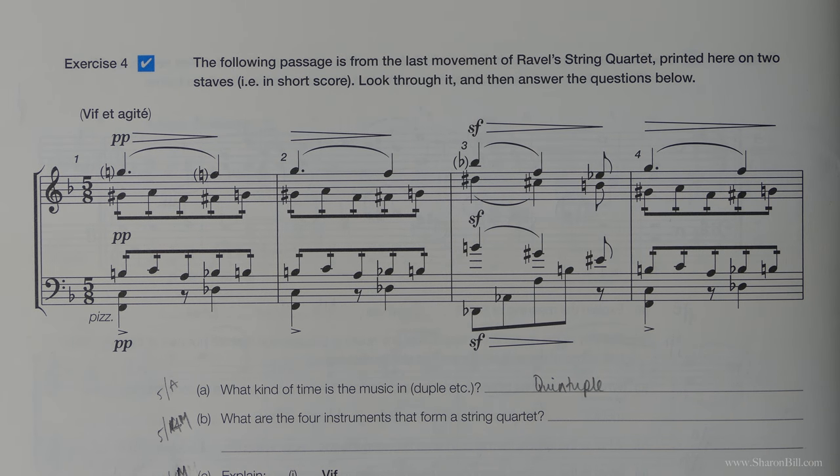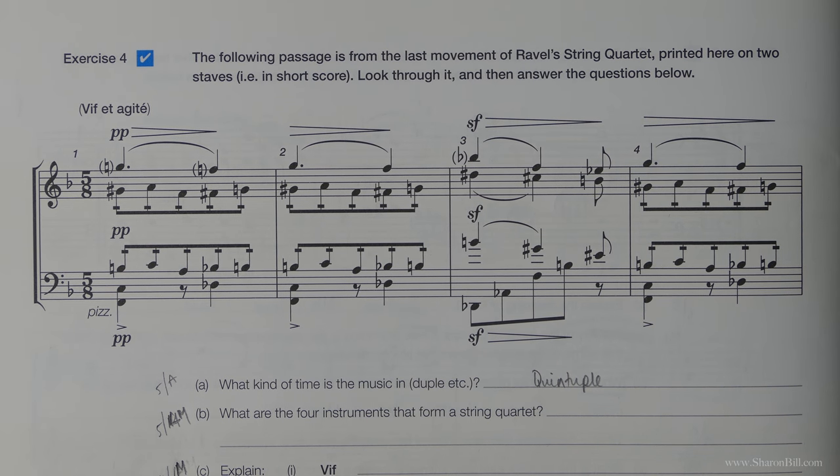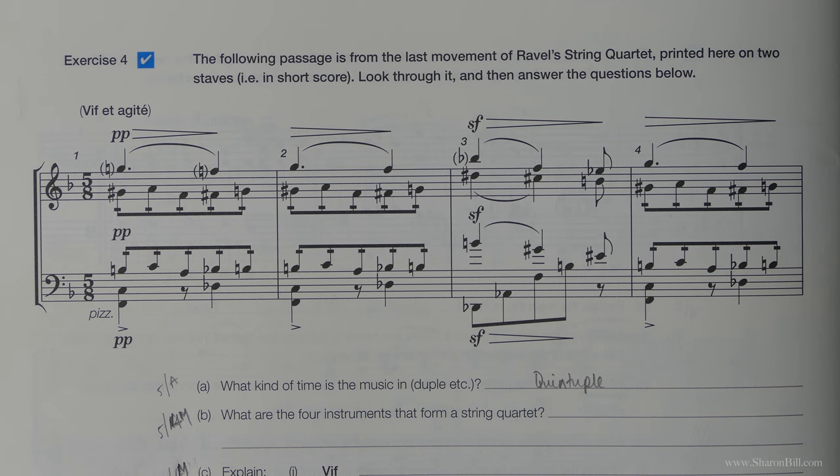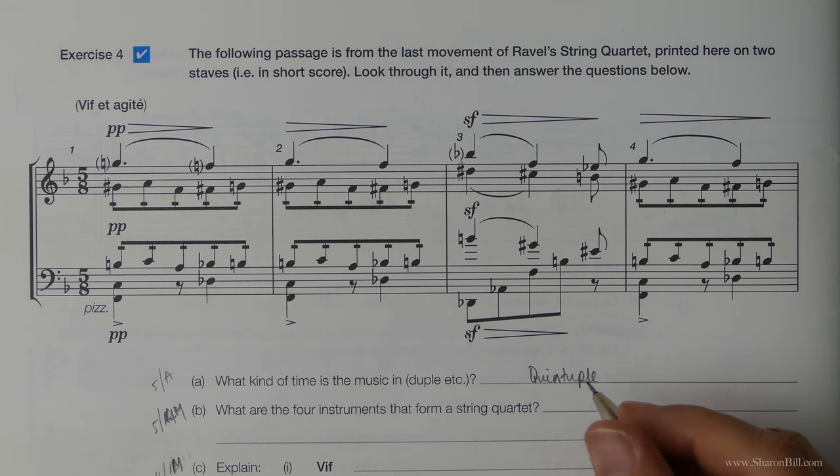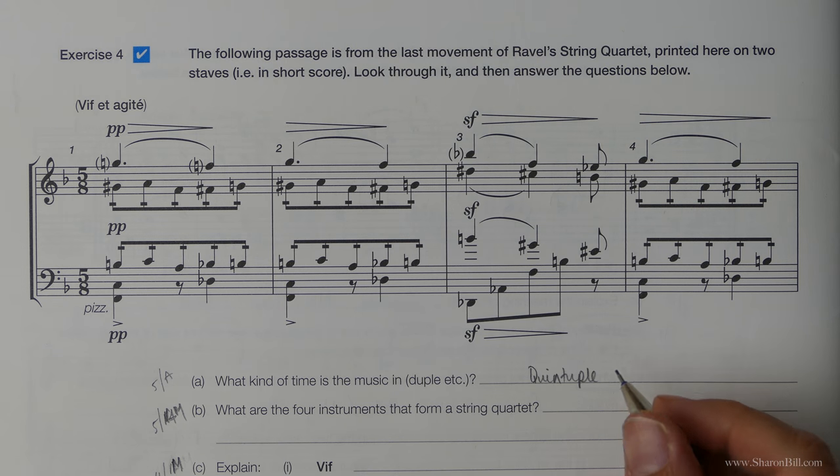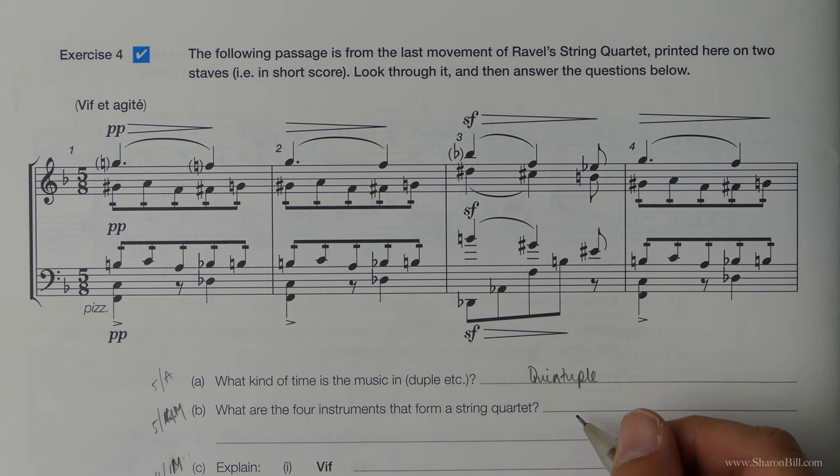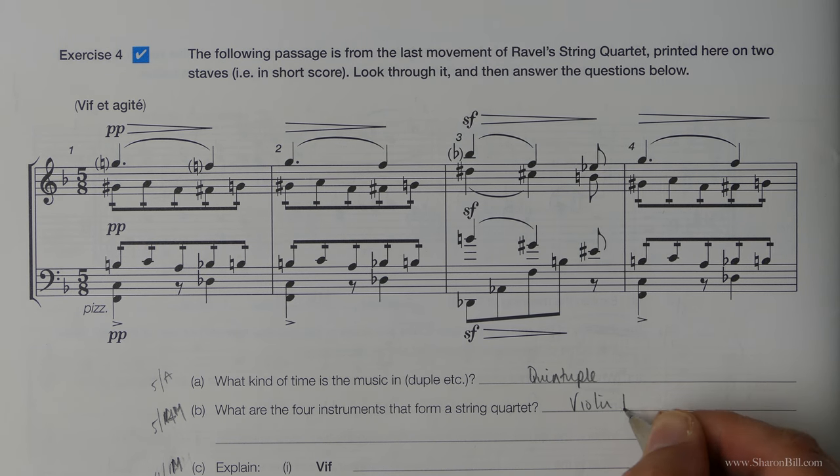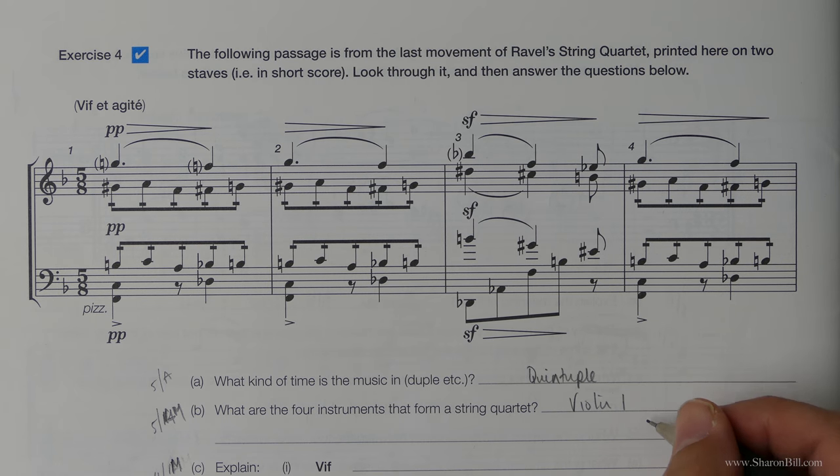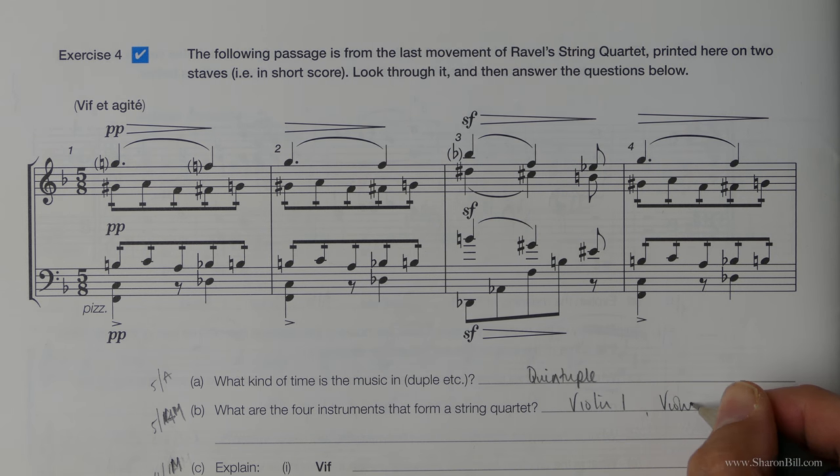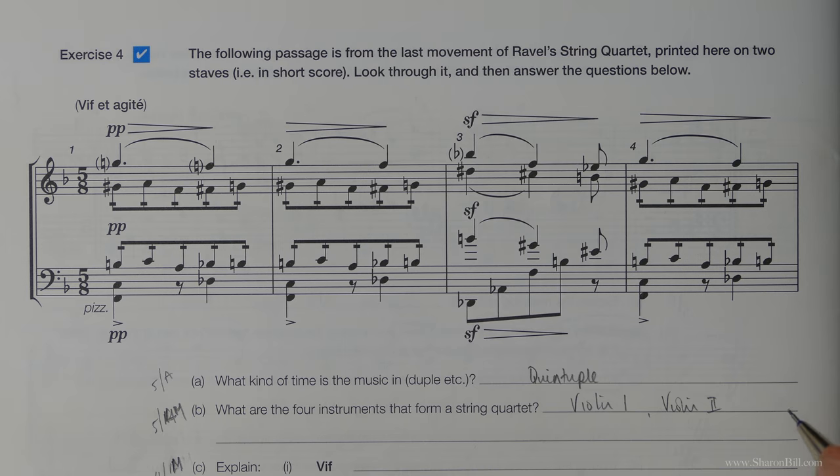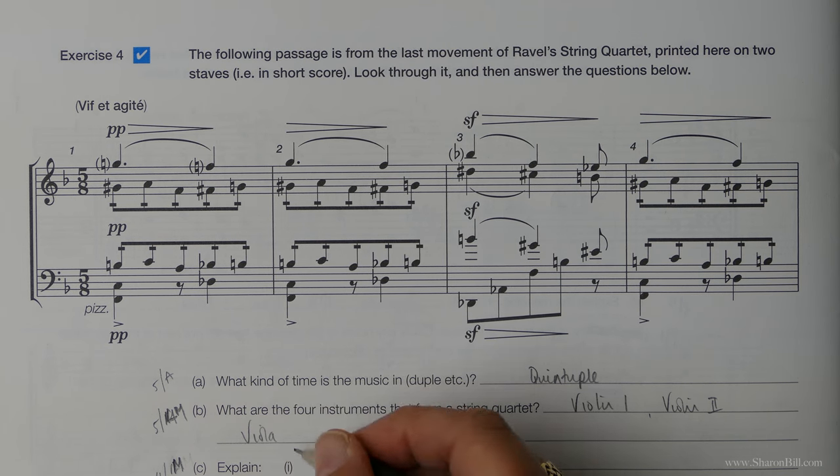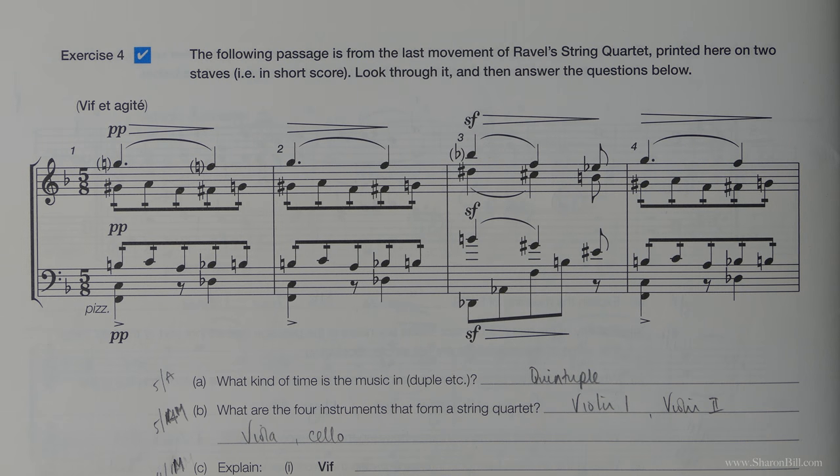What are the four instruments that form a string quartet? Now we did actually cover this in the previous exercise so it may be that you've remembered it from that. So we have violin one or first violin. We have violin two or second violin. We also have the viola and we have the cello. That's your string quartet.